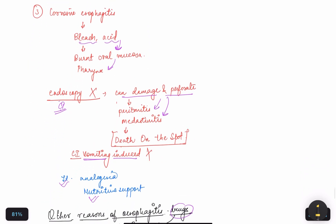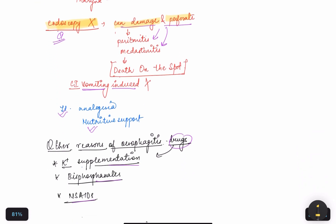Third, we have corrosive esophagitis. The word itself indicates corrosion takes place due to the intake of bleach or acid. We have burn of the oral mucosa in the pharynx. Endoscopy is contraindicated because it can damage the lining of the esophagus and perforation takes place, and it can be fatal to the patient because it will lead to peritonitis and mediastinitis, which causes death.